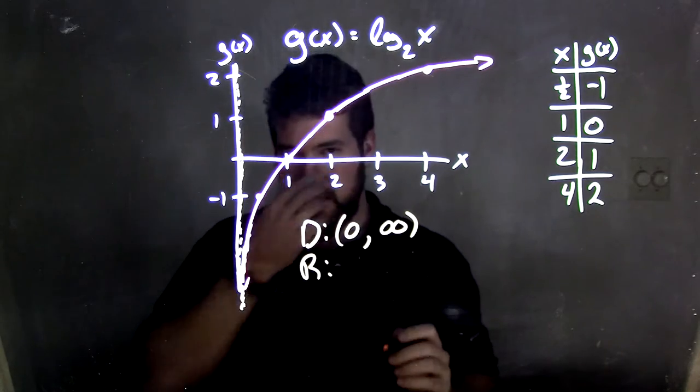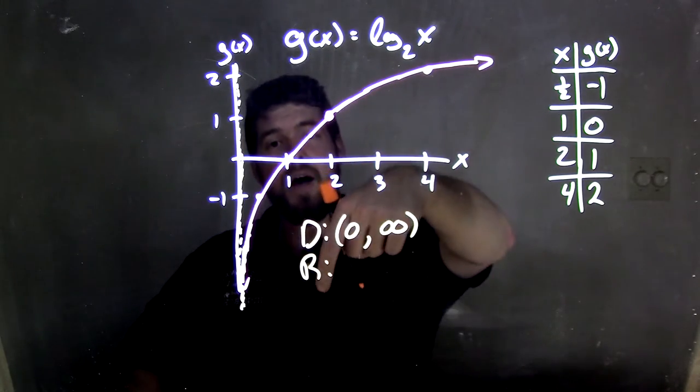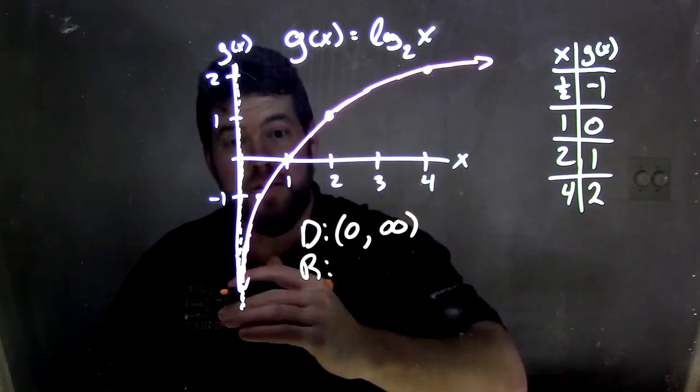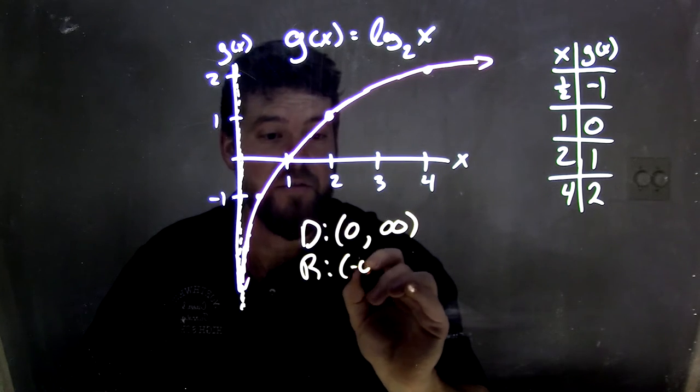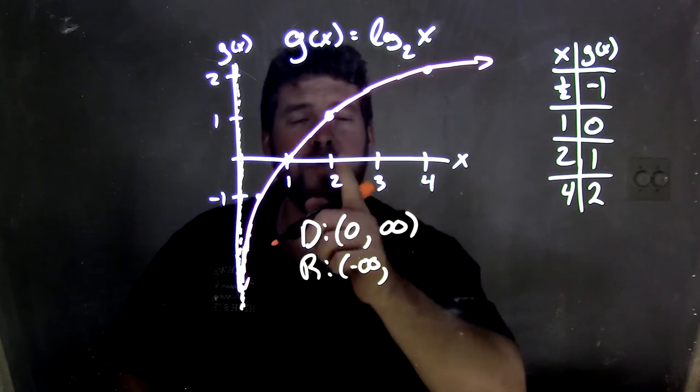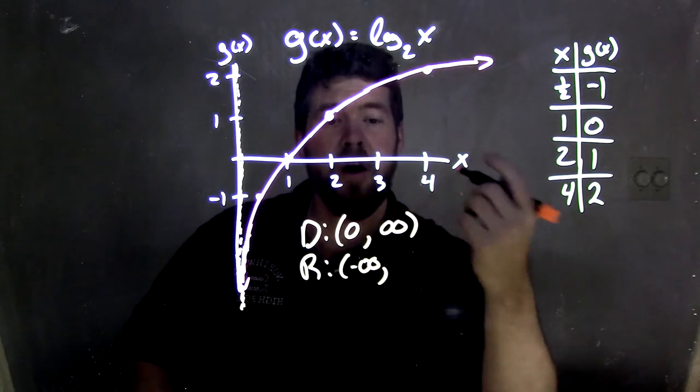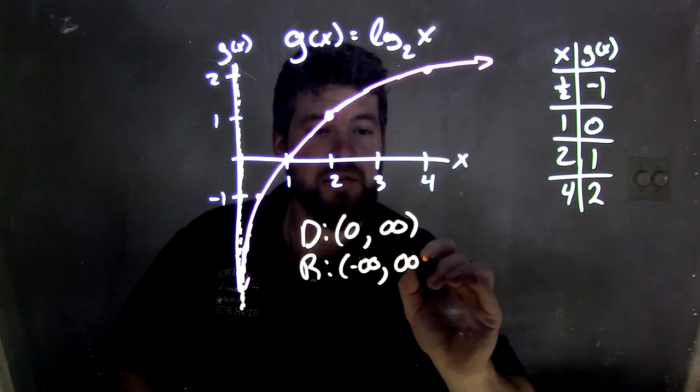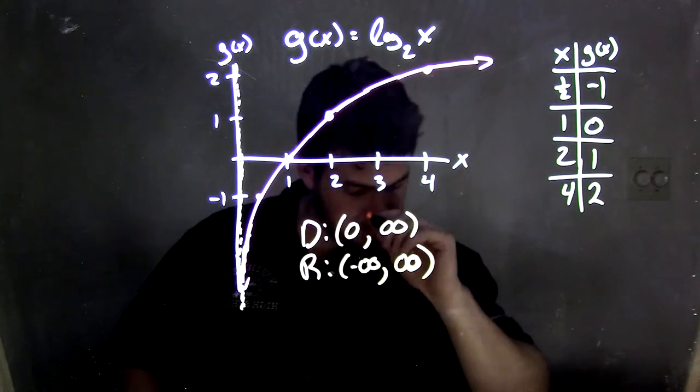Our range of this function, the lowest possible value, that's the lowest part on g of x, and that's negative infinity. And what's difficult to maybe see right here is the height, where it keeps going. And this function actually keeps on increasing all the way to positive infinity.